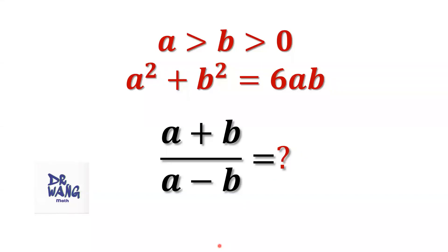Hello everyone, I'm Dr. Wang. Here is the question. If A is bigger than B, both A and B are positive, and A squared plus B squared equals 6 times A times B, what is the value of A plus B over A minus B?